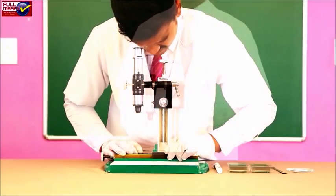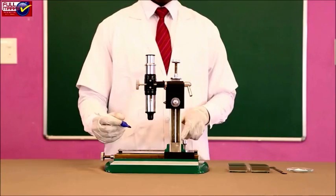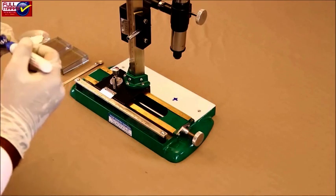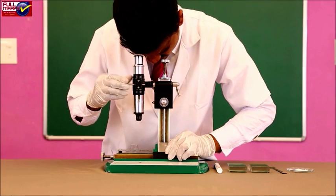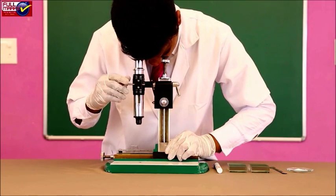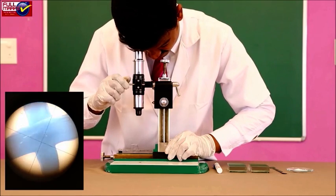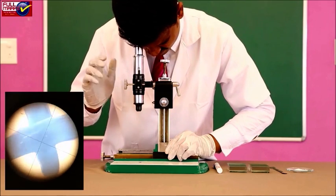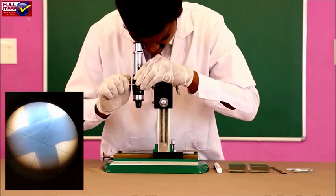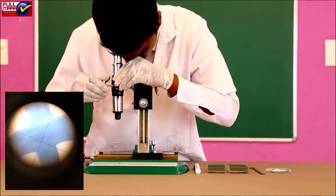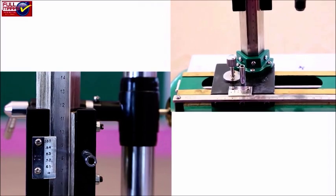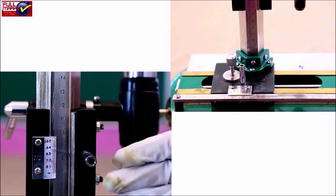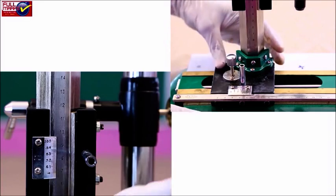Focusing the microscope on mark: Adjust the position of the eyepiece such that the cross wires are clearly visible. Using the marker pen, put a mark on the sheet of paper. Place the sheet of paper on the horizontal platform of microscope. Adjust the microscope such that the cross of cross wires coincide with the cross mark on the paper. Focus the microscope on the marker. Remove the parallax between cross wires and image of the mark. After that, using the main scale reading MSR and vernier scale reading VSR, note the microscope reading at A.